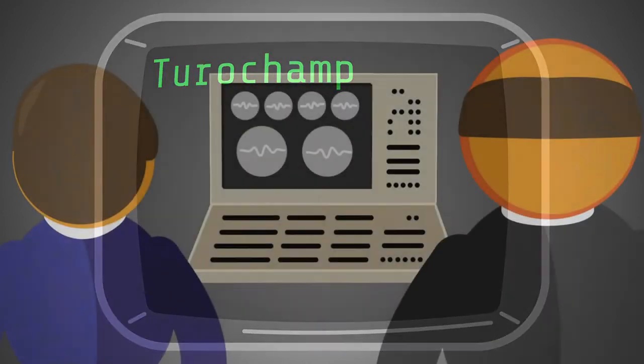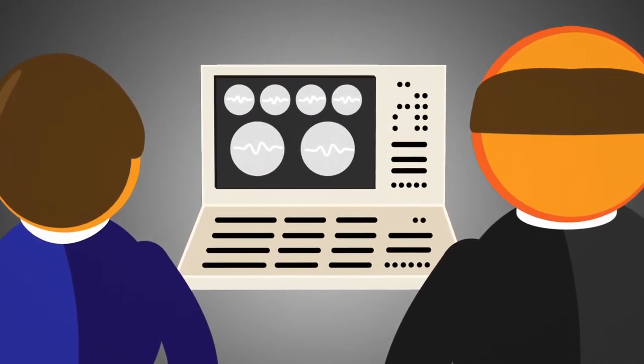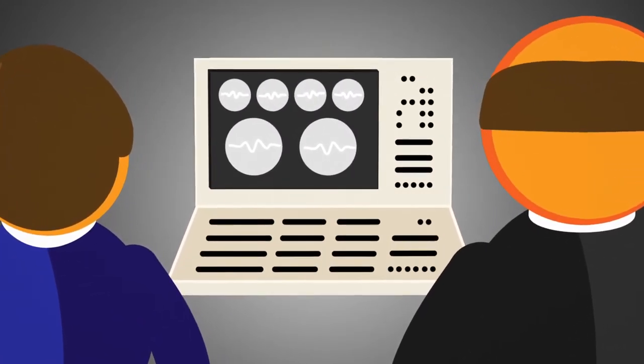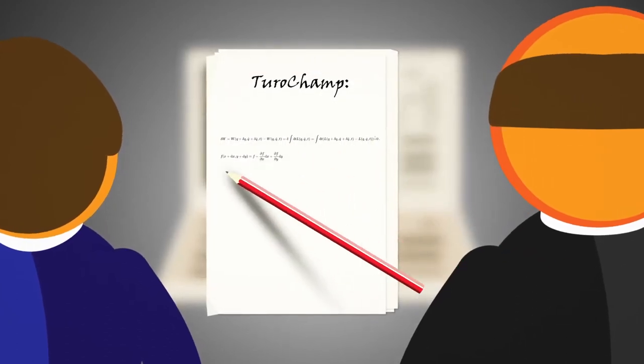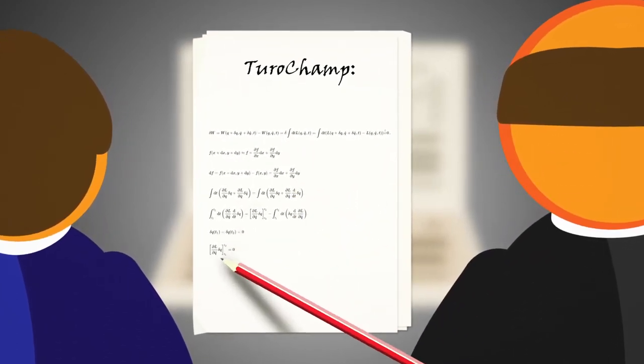Unfortunately, the game was too complex for computers available at that time. So, Turing decided to simply simulate his own computer program and do the moves following his calculations.